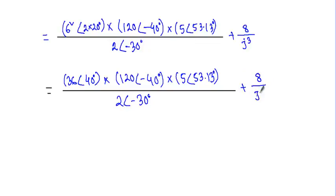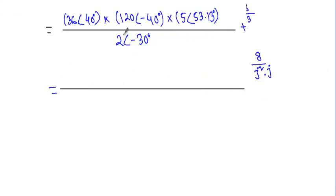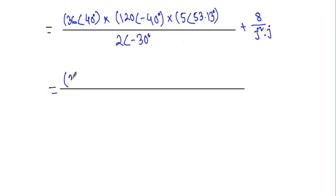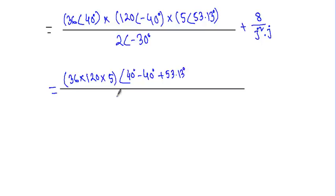We write j cubed as j-squared times j. To multiply the three polar complex numbers, we multiply the magnitudes together: 36 times 120 times 5, and we add the phase angles: 40 degrees minus 40 degrees plus 53.13 degrees. This is divided by 2 phase angle minus 30 degrees. Since j-squared equals minus 1, the term becomes minus 8 divided by j.